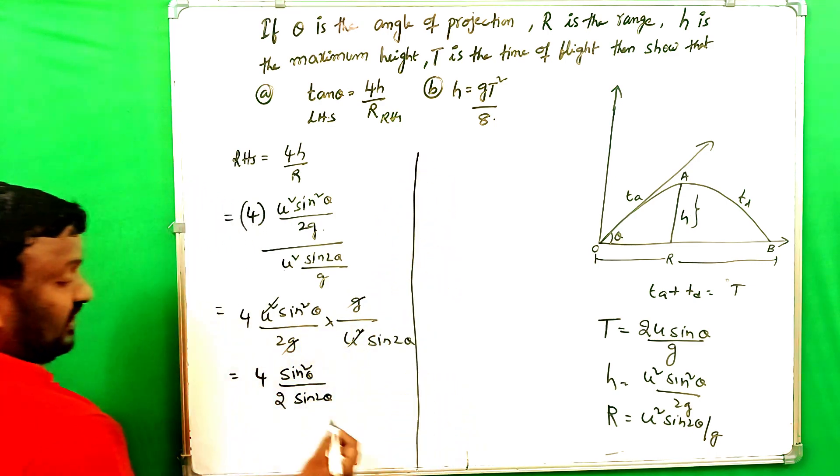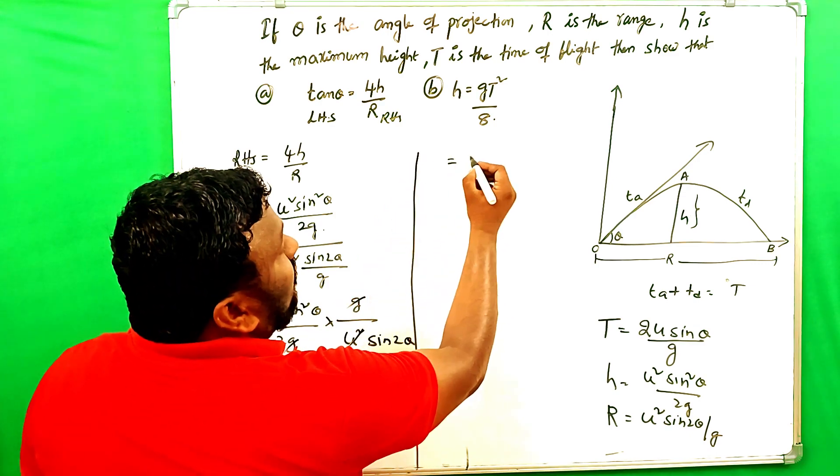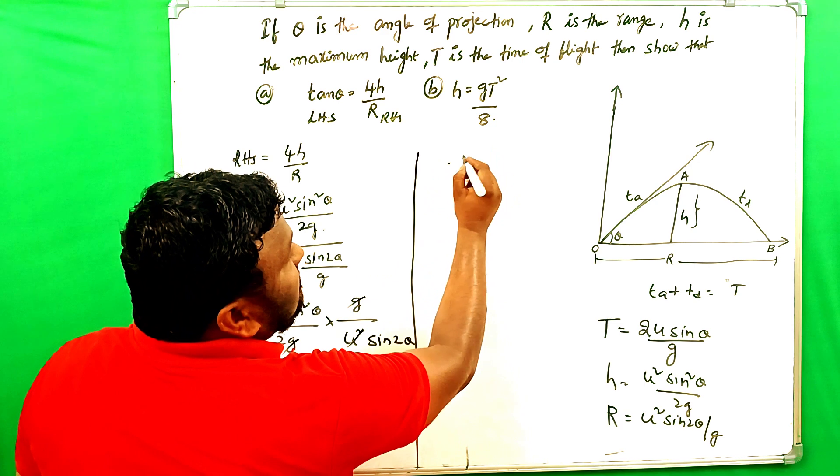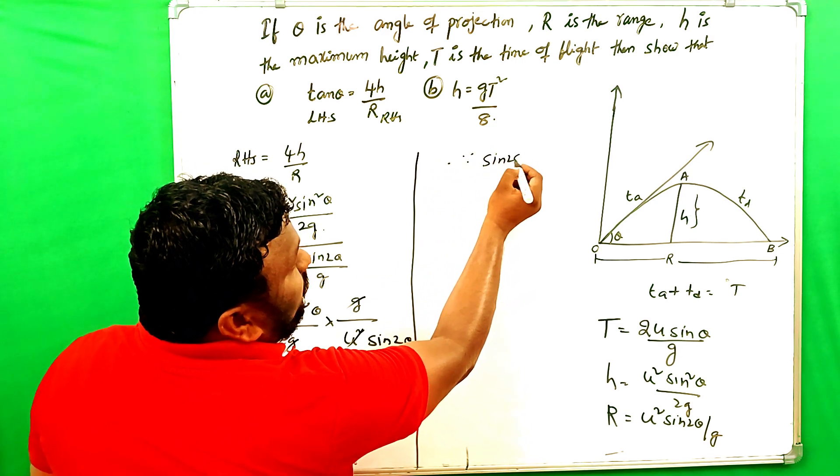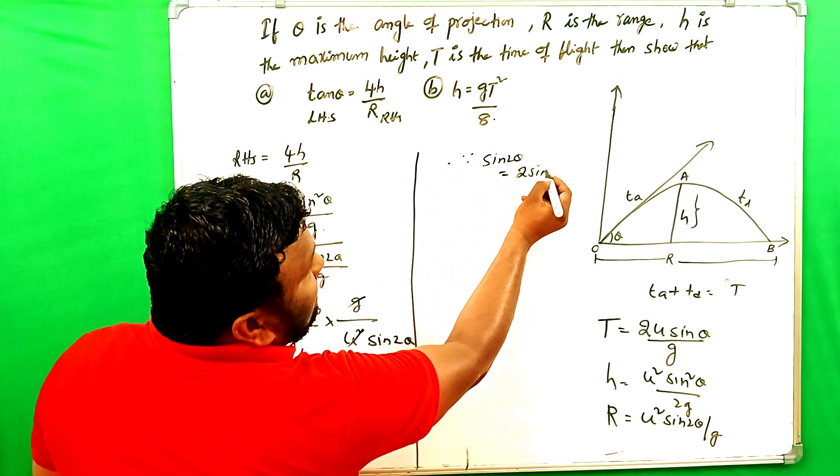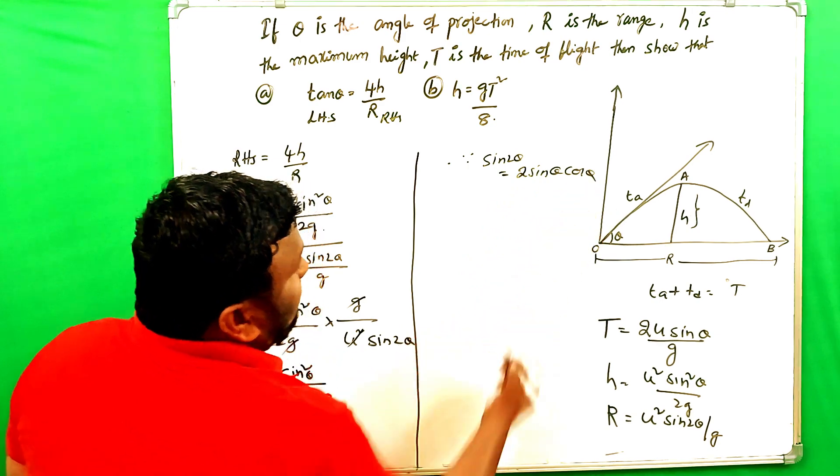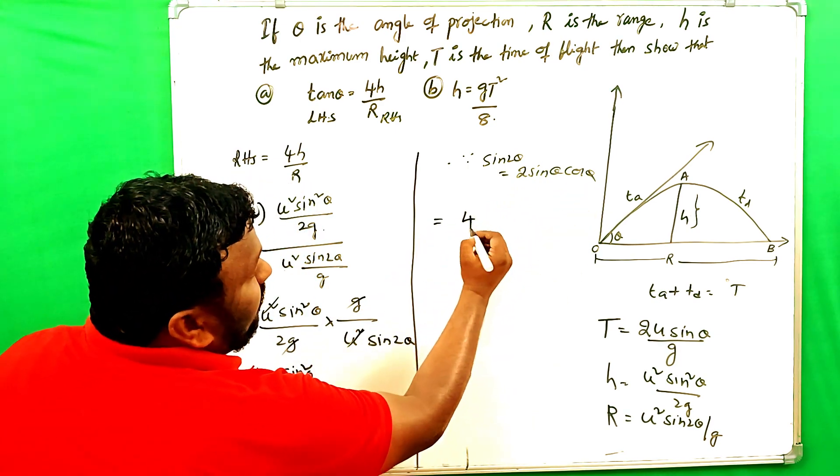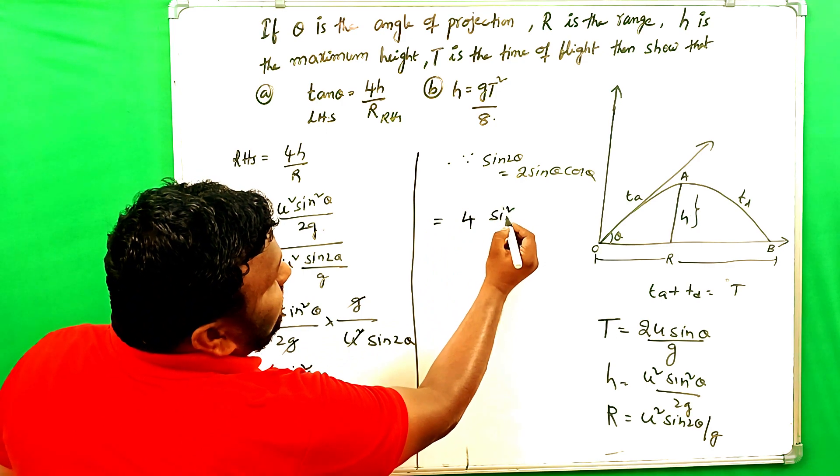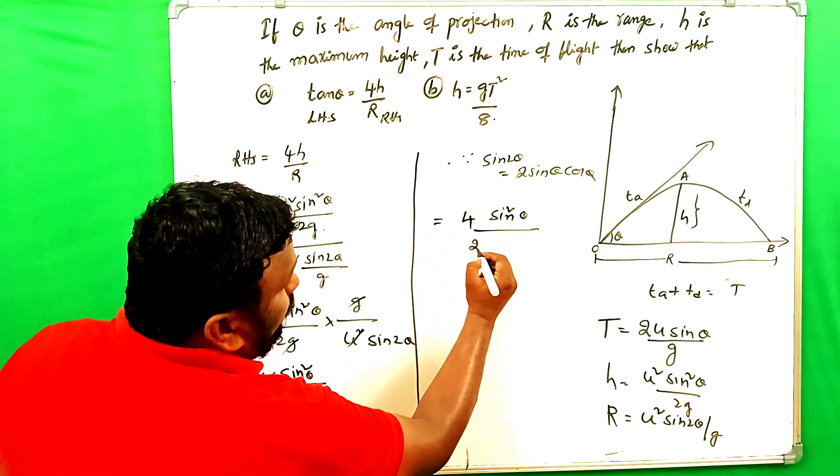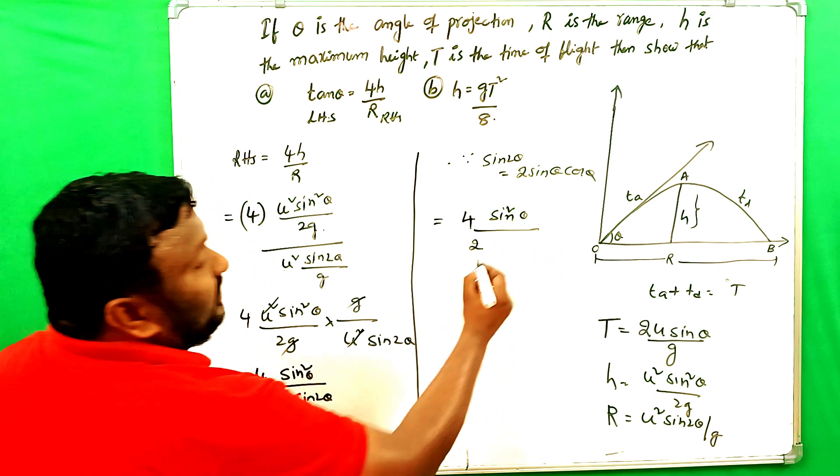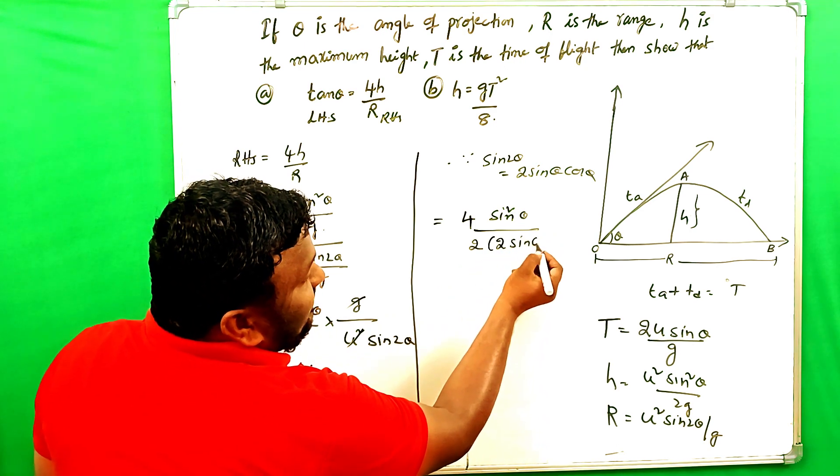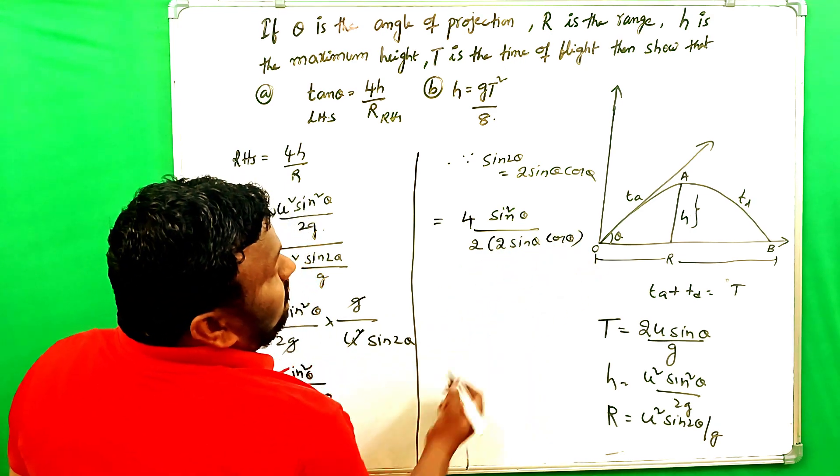Now, we have to prove that. What is? Since sin 2 theta is equal to 2 sin theta cos theta. And we have to prove that. That is equals 4 into sin squared theta by 2 of sin 2 theta and 2 into sin theta cos theta.